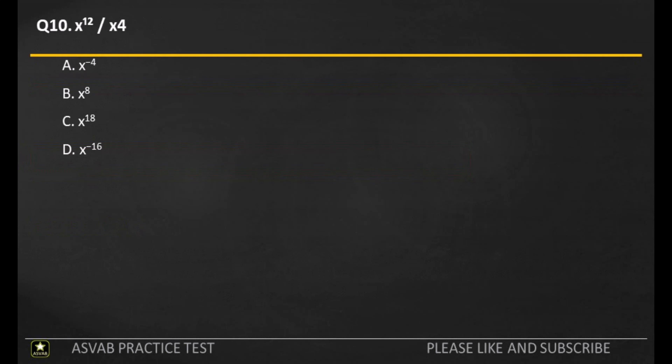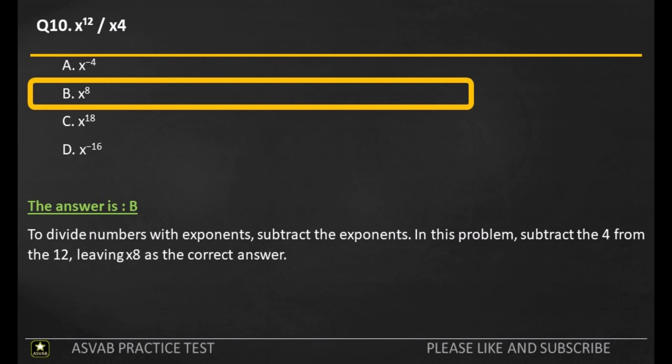Q10. A: X minus 4. B: X8. C: X18. D: X minus 16. The answer is C. To divide numbers with exponents, subtract the exponents. In this problem, subtract the 4 from the 12, leaving X8 as the correct answer.